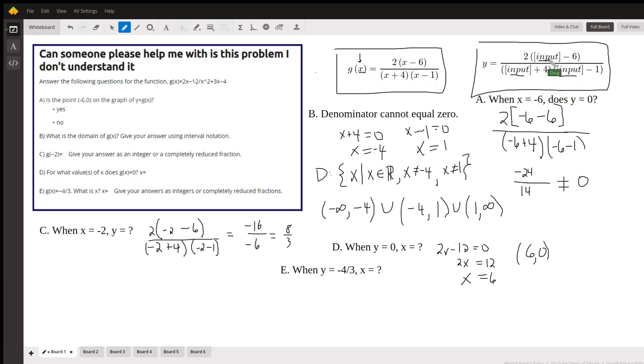So g of 2, I'd put a 2 where it says input. g of h, I'd put h where it says input. For part a, is the point negative 6, 0 on the graph of that function? That's the same as asking the question, when x equals negative 6, does y equal 0? So if I put negative 6 where it says input, this is the work. And I get negative 12 sevenths, which does not equal 0. So the answer to this one is no.